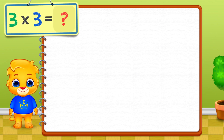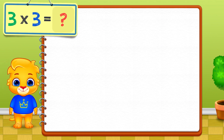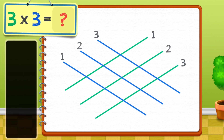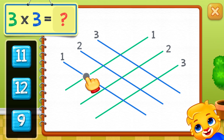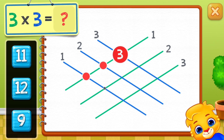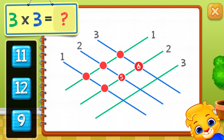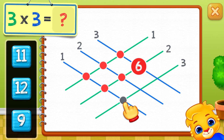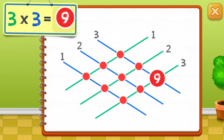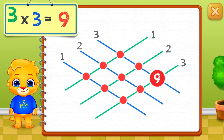Let's learn to multiply using the stick method. Three times three equals — touch intersection points: one, two, three, four, five, six, seven, eight, nine. Three times three equals nine.